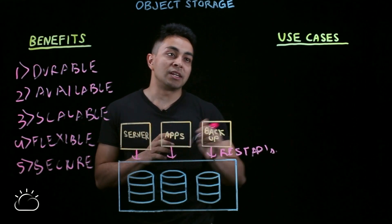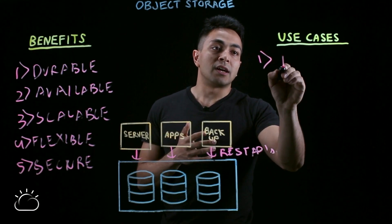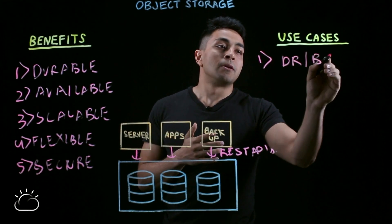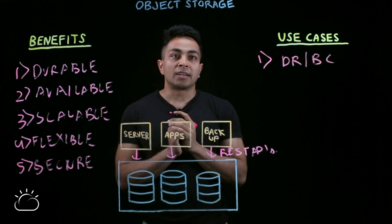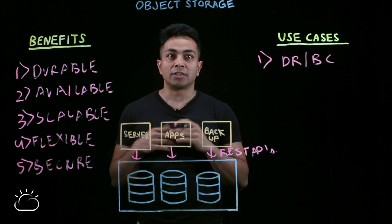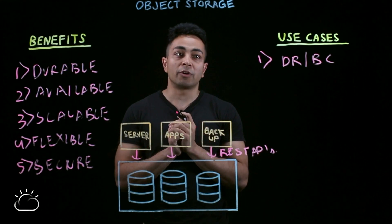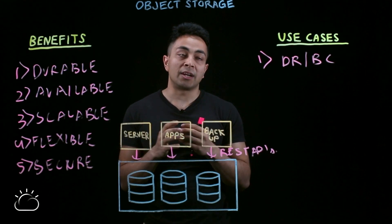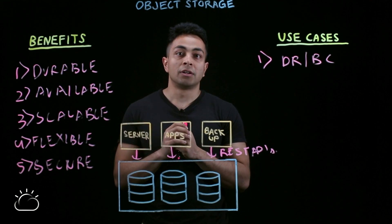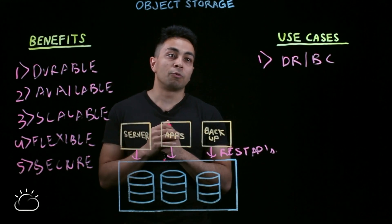Now let's talk about the use cases. The first use case is disaster recovery or backup. For example, take a financial service company — you're a CTO with critical workloads running on VMware and you want to backup your data. Object store is a great solution to store that cost effectively and in a secure way.